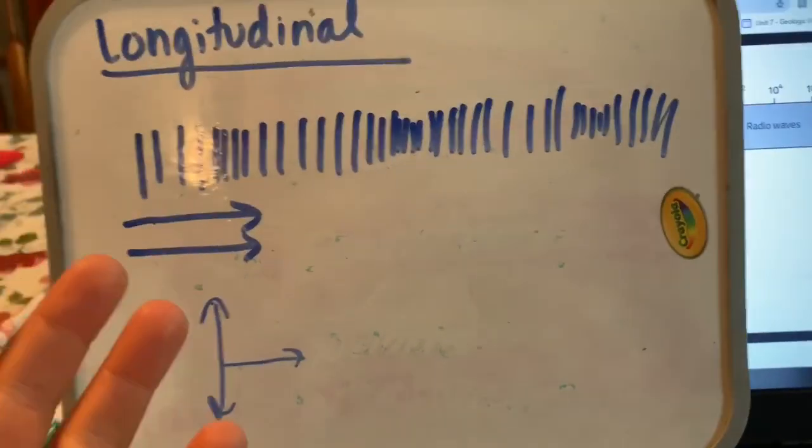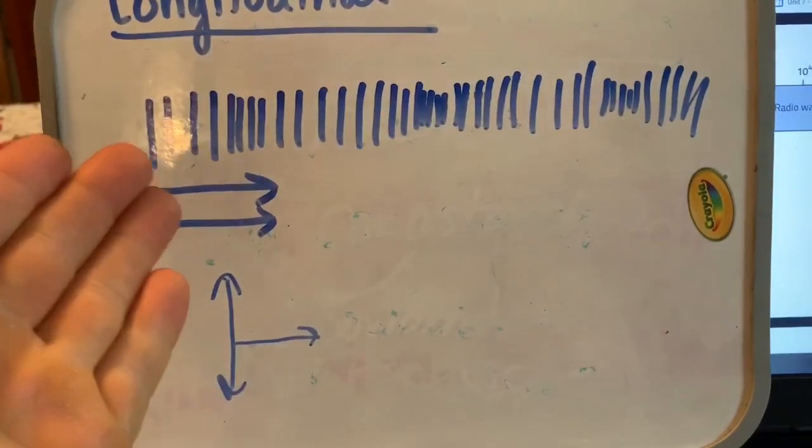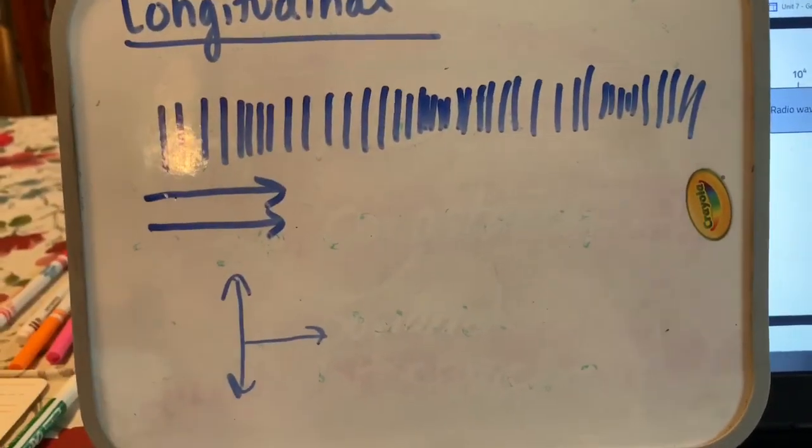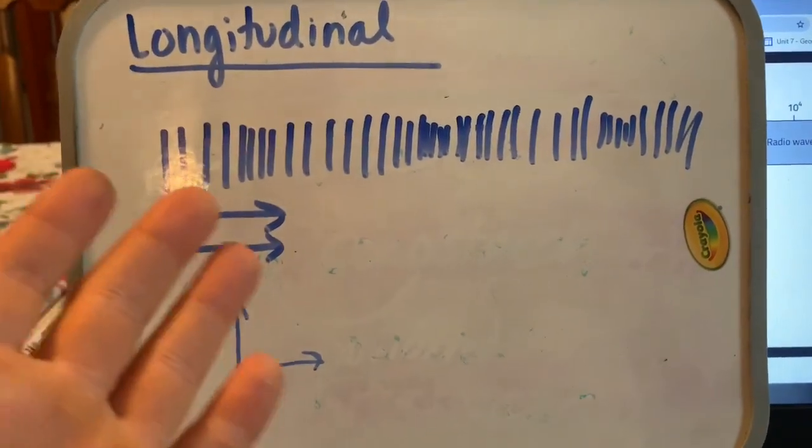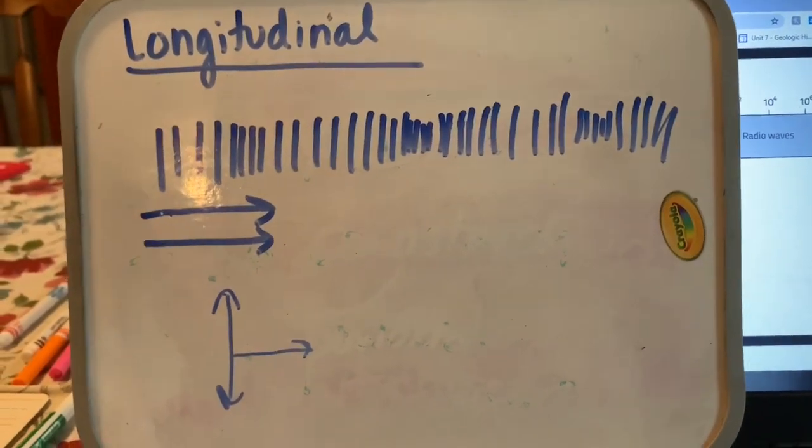This is why there's no sound in space, because there are no air molecules in space for these vibrations to happen. So you can't move the sound from one place to another. Earthquake waves also move in this fashion. Like I said with the transverse waves, you will be able to easily model this using a simple slinky.